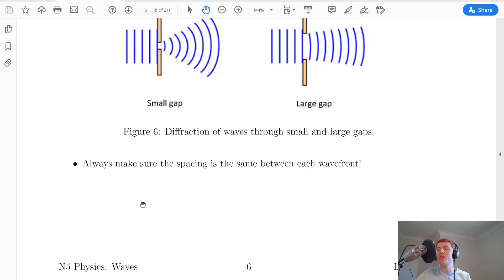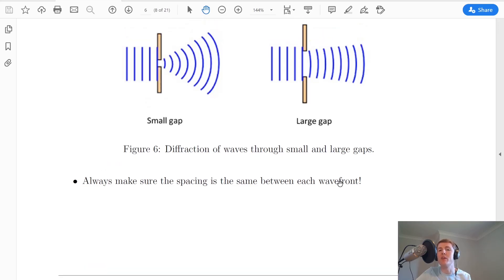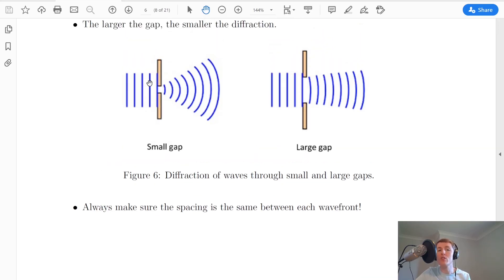Just one last thing to point out when you're drawing your own diffraction diagrams, you need to always make sure that the spacing is the same between each wave front, between each wave. So you'll notice over here, for example, I've got the same space between each wave, even when I've shown the bending and showing the waves curving round, they're still the same distance roughly between each wave. And you need to make sure you're doing that in your own diagrams as well.